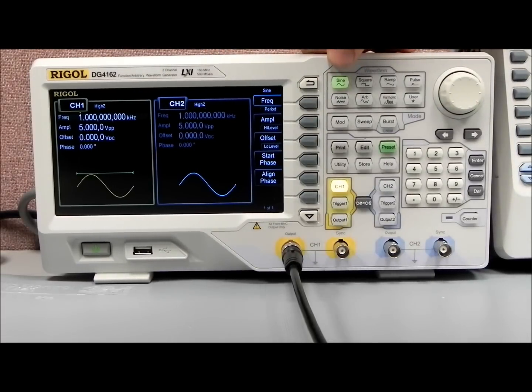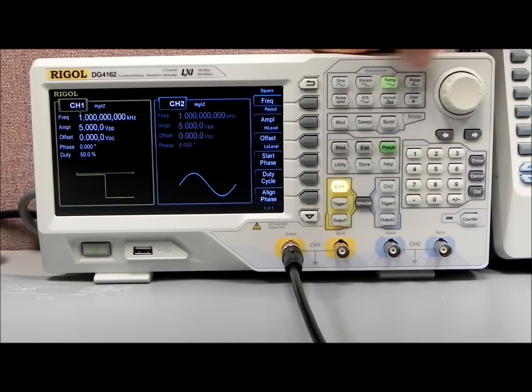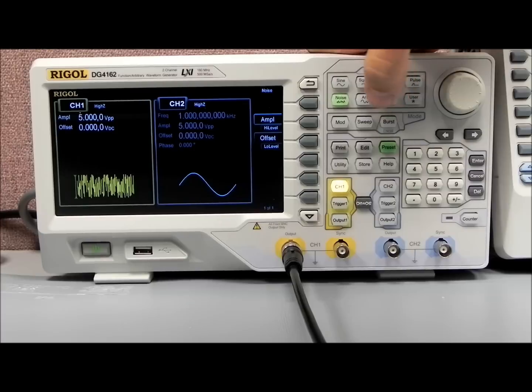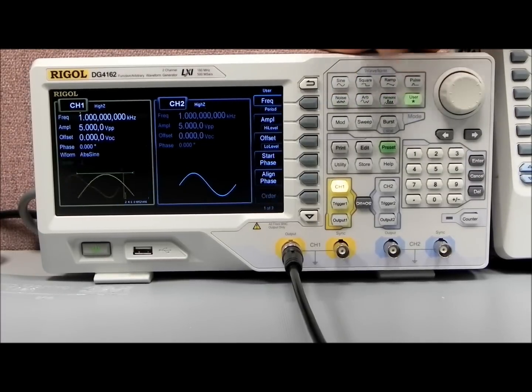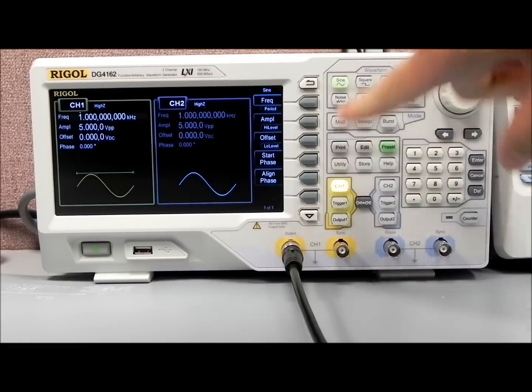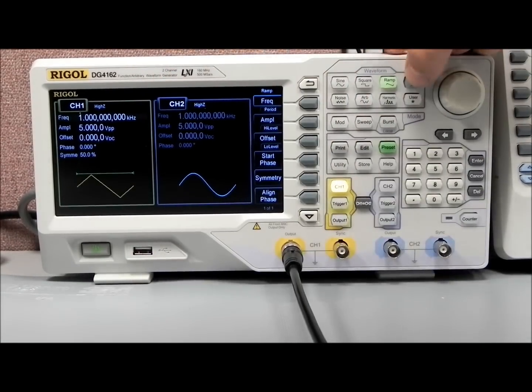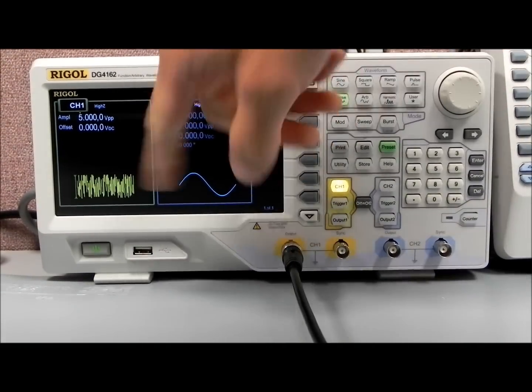Some of the standard waveforms that we have are sine, square, ramp, pulse, noise, ARB, harmonic, I'll explain a little bit more, and then user, you can define that button. But you'll see on the display, we see sine, square, ramp, pulse, etc.